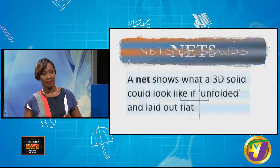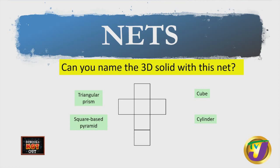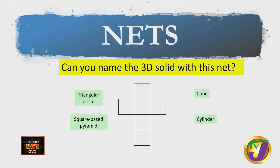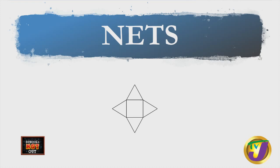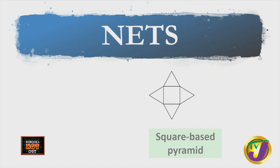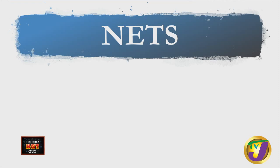So our first net is up. Can you name the 3D solid with this net? Did you say cube? Awesome job! What about this one? I'm sure you got it. Yes, it is a square base pyramid. Awesome! Now as we said before, remember the net is — if you were to open up that solid and lay it out flat — that's what the net would represent.